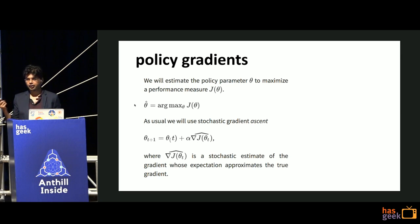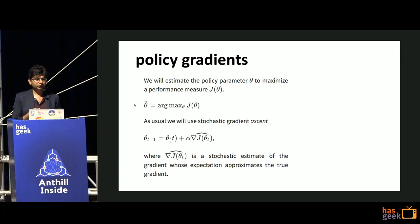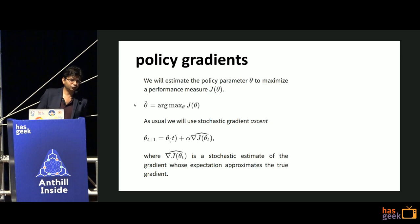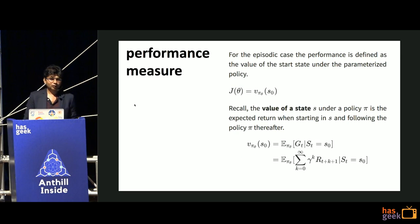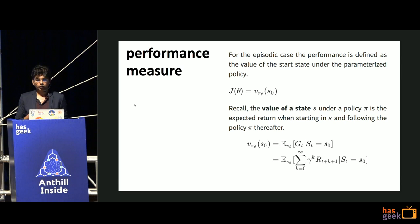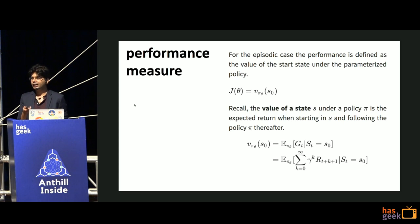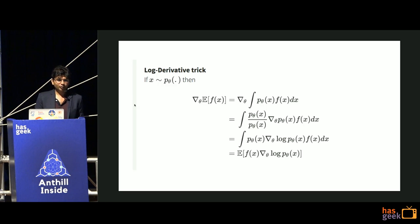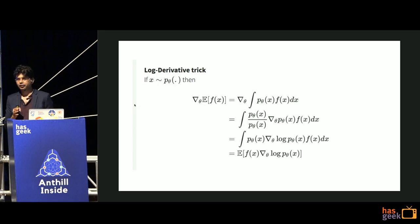The goal is to learn a parameterized policy that selects actions without consulting the value function. We do the standard deep learning trick: I have policy parameter theta, the parameters of the CNN, and I want to maximize the performance measure J(θ). We do stochastic gradient ascent: θ_{t+1} = θ_t + α · ∇J(θ). The whole literature - probably 20 to 30 pages - is about different ways of computing this gradient. That's what policy gradient is all about.